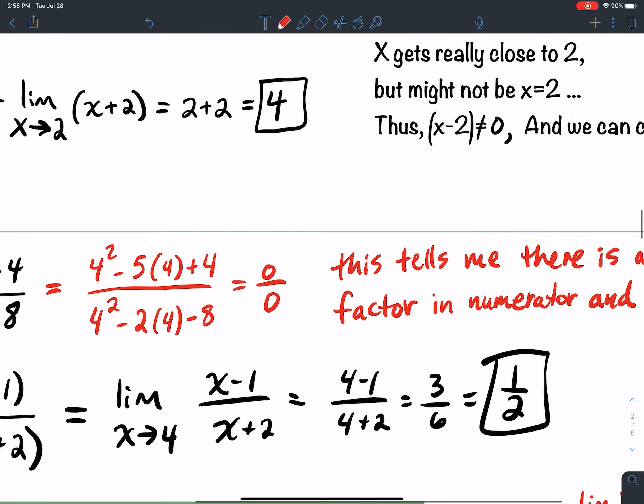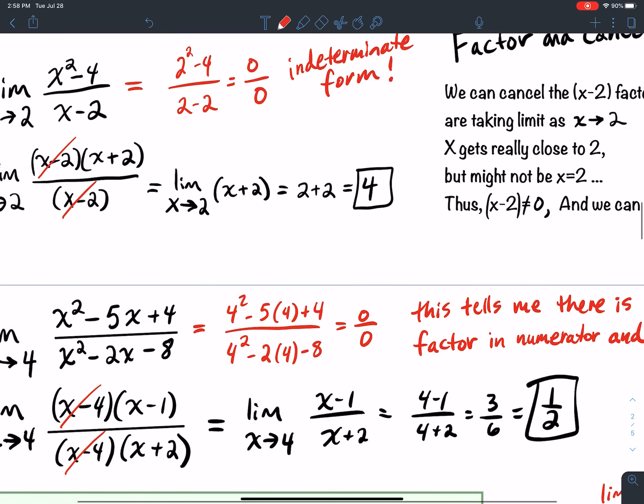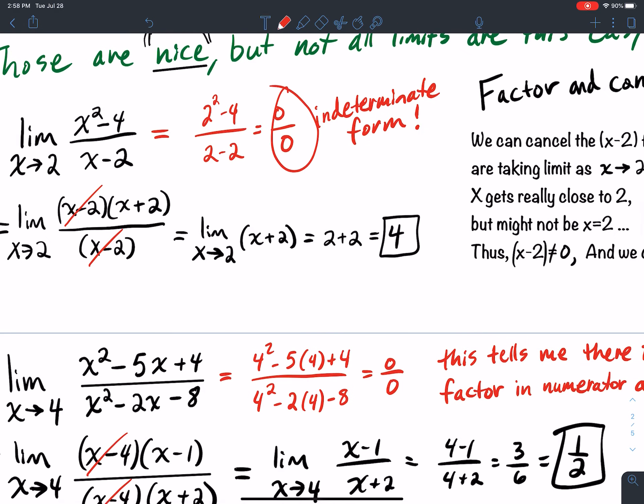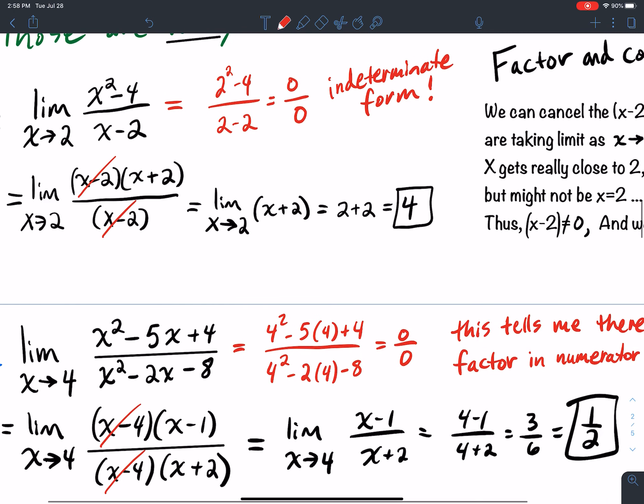So that works through how to factor and then cancel. So when you get this indeterminate form of 0 over 0, you should be thinking about factoring it. And if it's like, you know, say you had the limit as x goes to negative 3, then you might be looking for an x plus 3 factor in the numerator and the denominator, right?